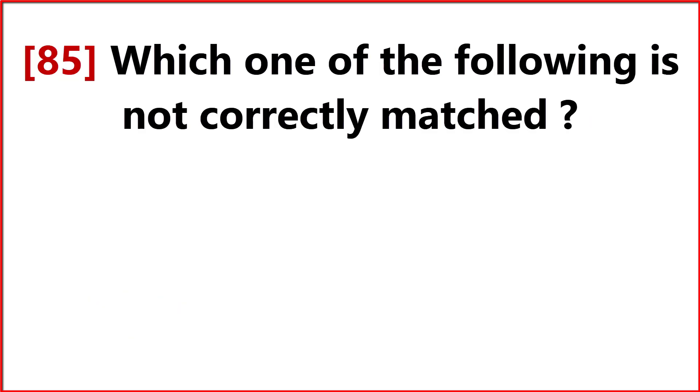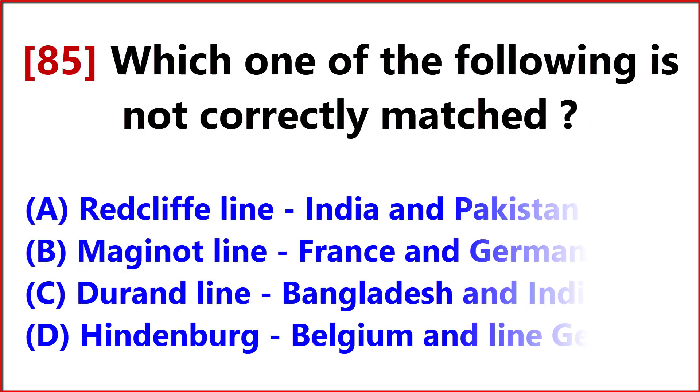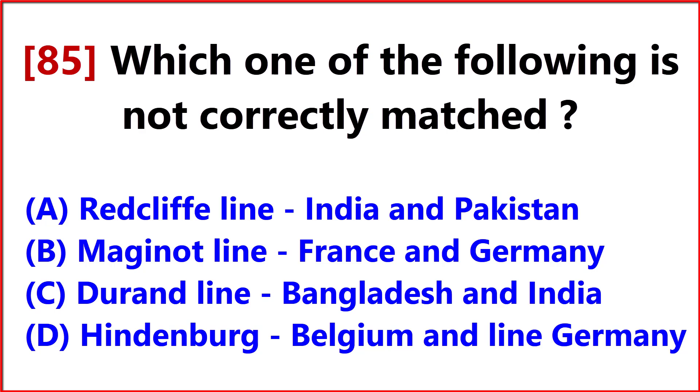Which one of the following countries is not correctly matched? Answer Option C: Durand Line — Bangladesh and India.